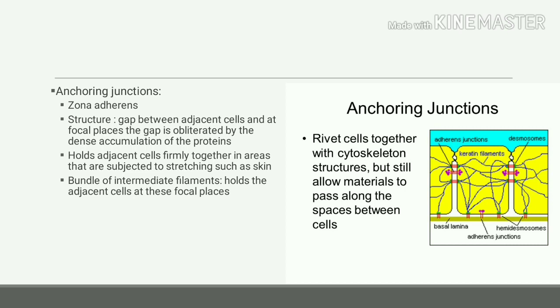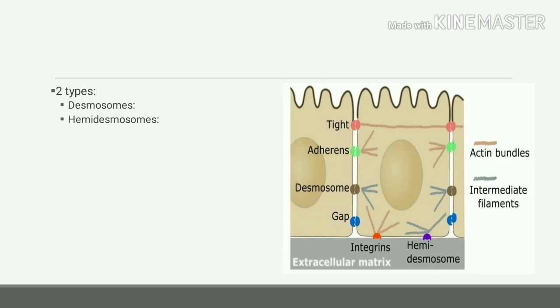The role of these anchoring junctions is to hold adjacent cells firmly together in areas which are subjected to stretching, like in the skin. Sometimes bundles of intermediate fibers are present in these focal areas and they hold the adjacent cells at these focal areas.